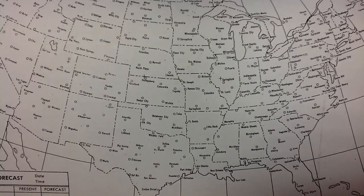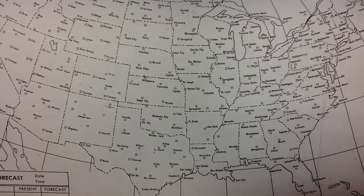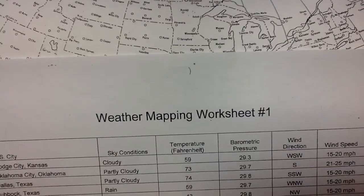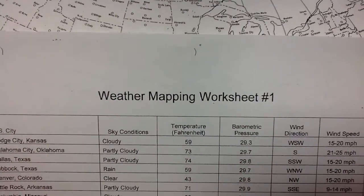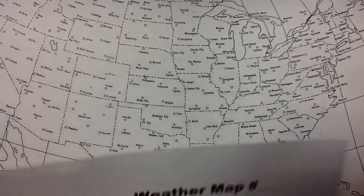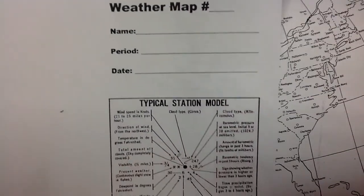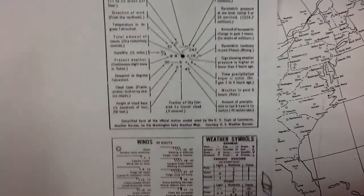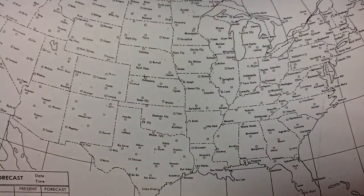The first thing we're going to do is work on the station models, recording those on the weather map. For this assignment you're going to need your weather map, which is right in front of you, a weather mapping worksheet number 1, and the station model reference guide that I have here.